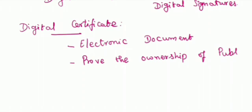In symmetric and asymmetric encryption, all details are encrypted by means of a public key and later decrypted by means of a public key. To prove the ownership of that public key, we need a digital certificate. The digital certificate is more or less similar to your ID card.